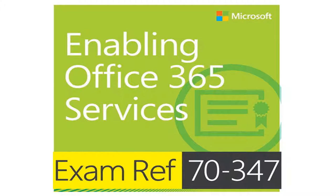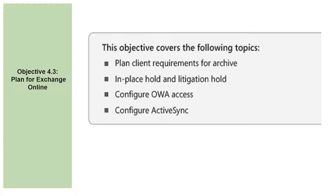Enabling Office 365 Services, exam reference 70-347. Objective 4.3: Plan for Exchange Online. This objective covers the following topics: plan client requirements for archive, in-place hold and litigation hold, configure OWA access, and configure ActiveSync.